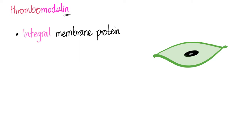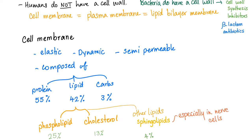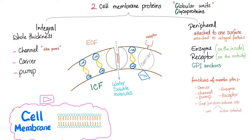Thrombomodulin — if it ends in "-in", it's a protein. It's an integral membrane protein. In a previous video called Cell Membrane, I talked about the cell membrane, which is composed of protein, lipid, and carbohydrate. Proteins are the most prevalent. Those proteins come in two types: integral membrane proteins and peripheral membrane proteins.